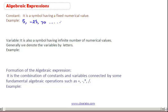These are called constants. What is a variable? It is also a symbol having an infinite number of numerical values. Generally, we denote the variables by letters such as x, y, a, b, c, p, q, and so on. These are called variables.